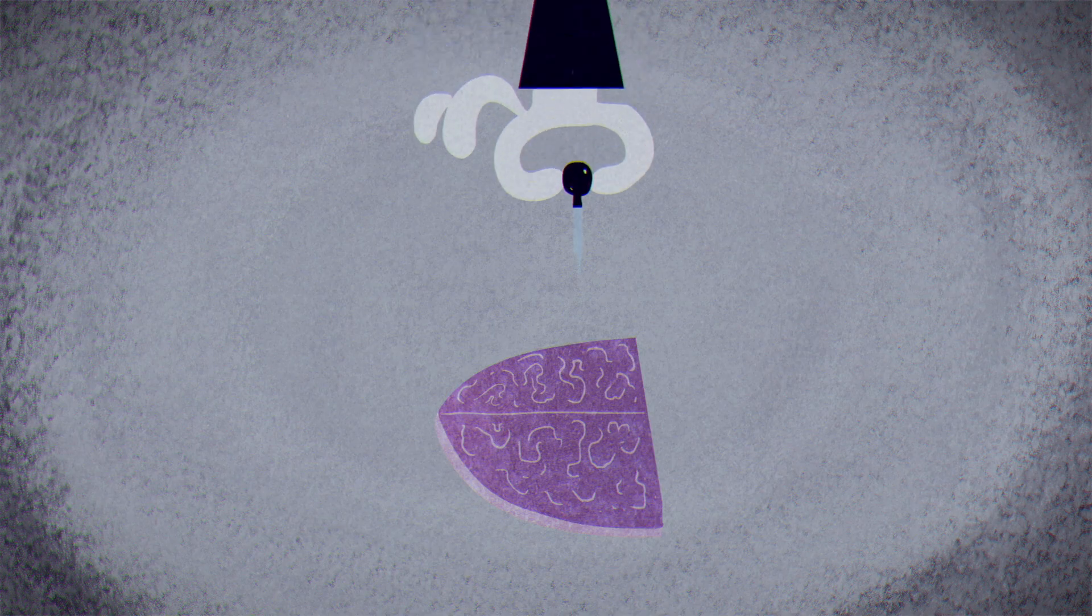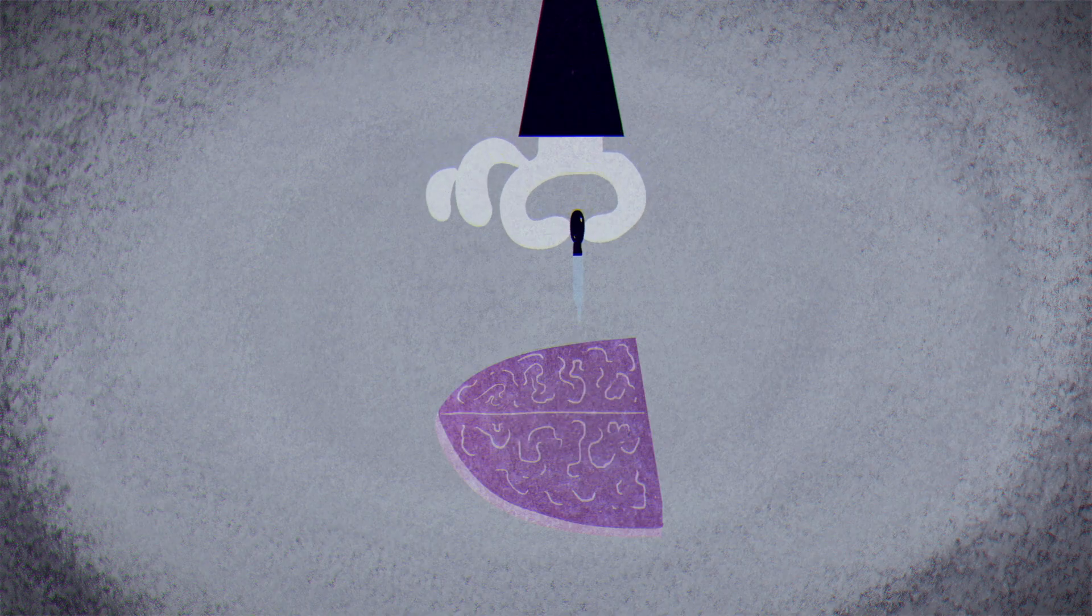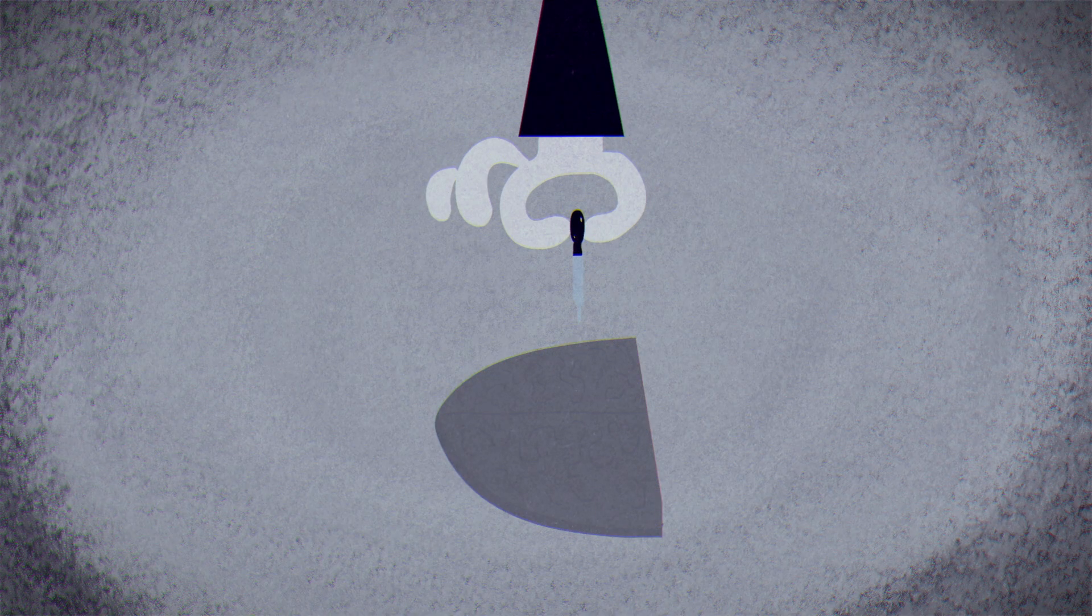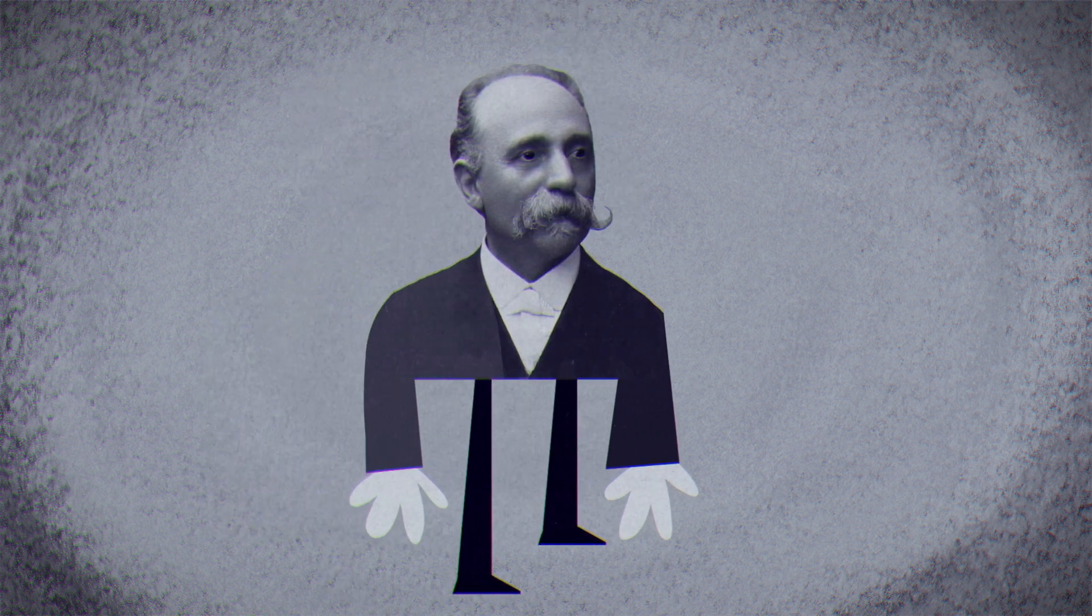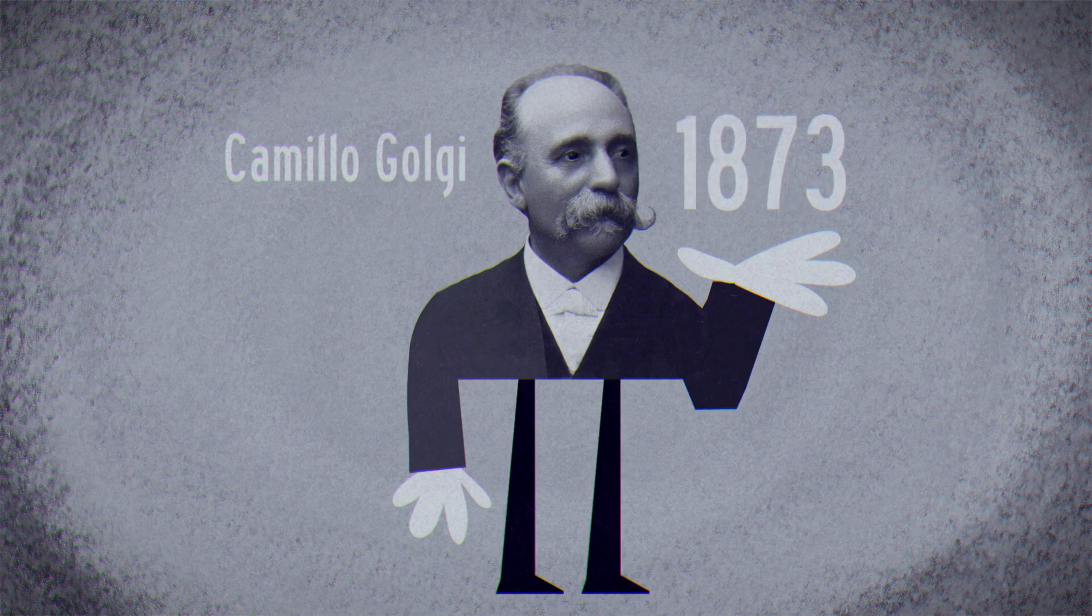To improve their view, scientists began experimenting with special staining techniques designed to provide clarity through contrast. The most effective came courtesy of Camillo Golgi in 1873.